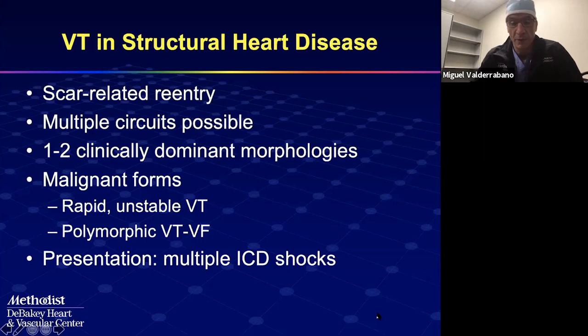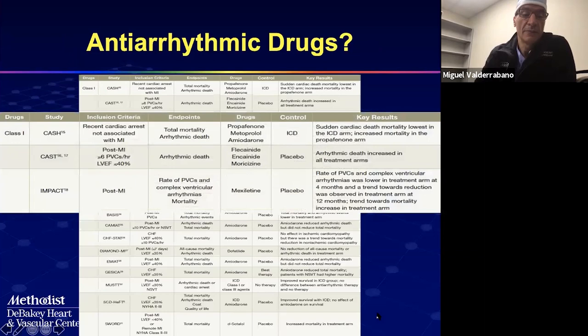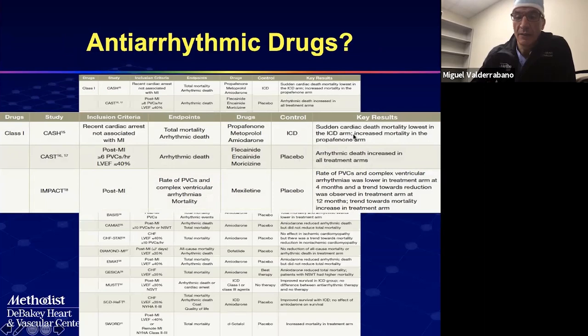Typical presentation is multiple ICD shocks, whether in VT storm or not. How do we treat VT in congestive heart failure? The take-home message about antiarrhythmic drugs is very simple: they don't work. Class 1 drugs, as tested in the CASH study, CAST study, and IMPACT, showed that propafenone had increased mortality compared to amiodarone or ICD implants. Flecainide, encainide, and moricizine all increased mortality compared to placebo, as did mexiletine. Class 1 drugs are out.